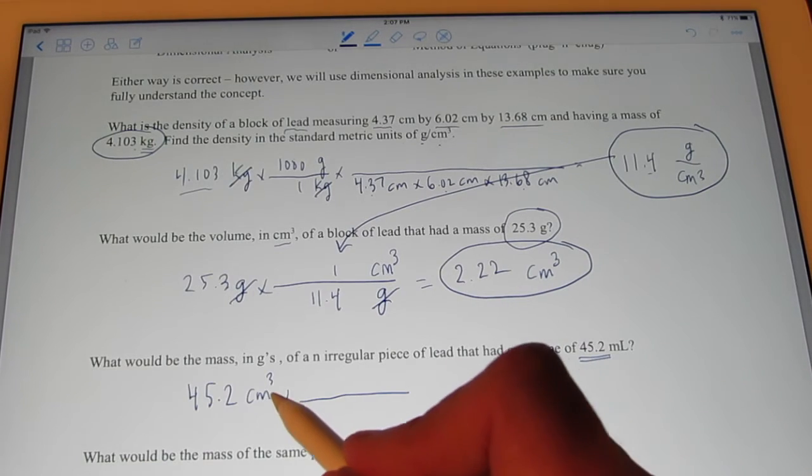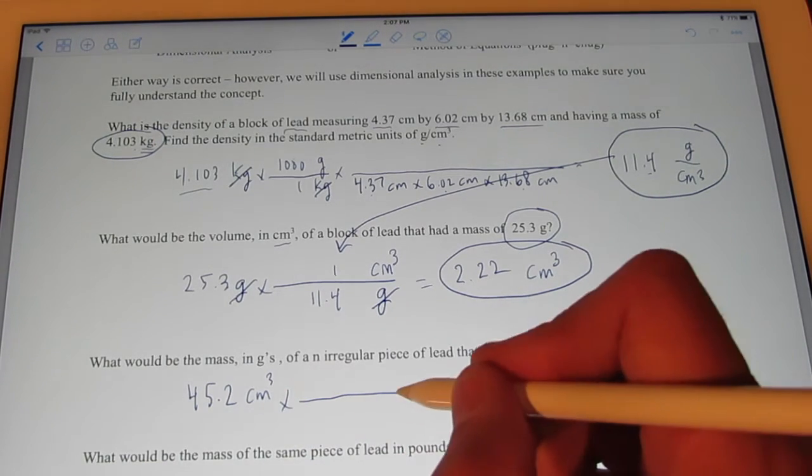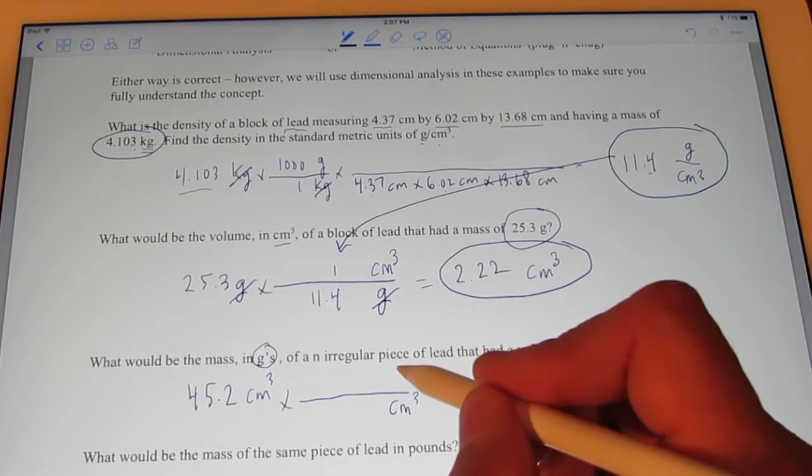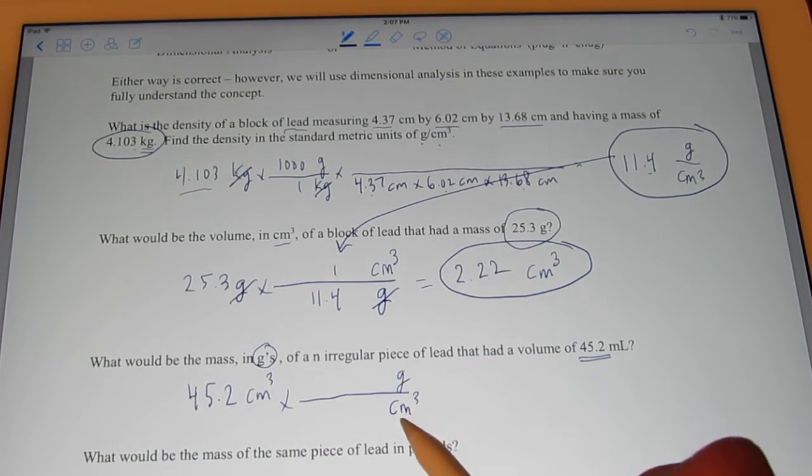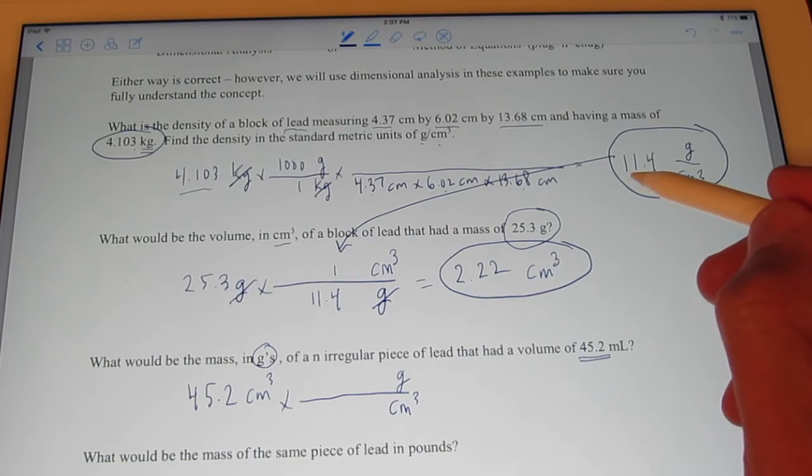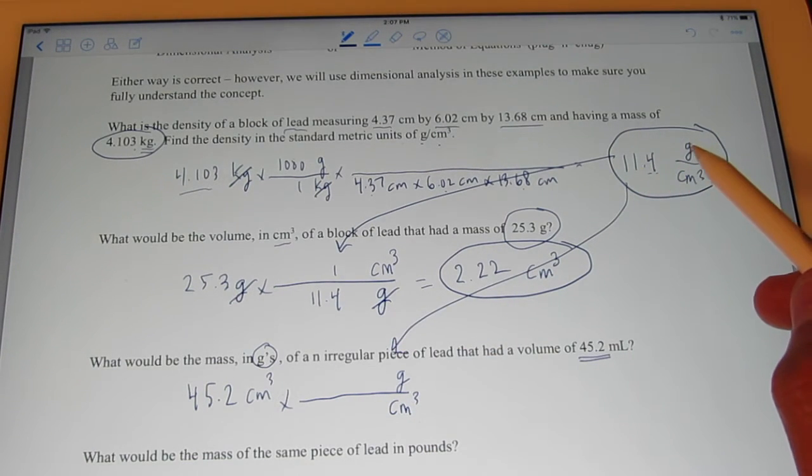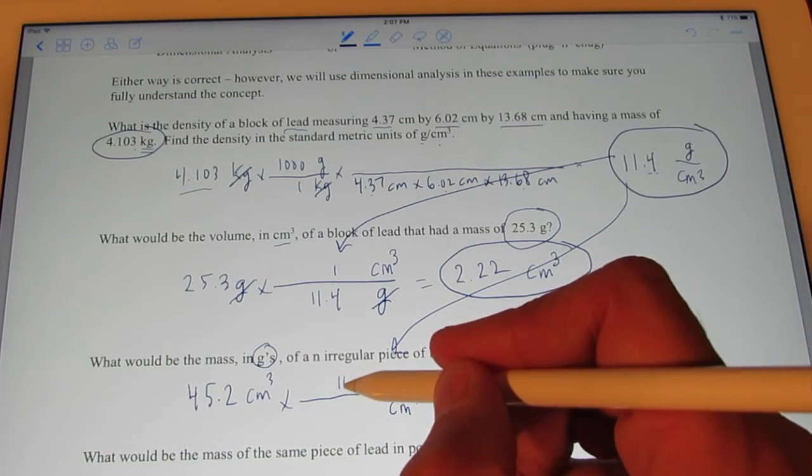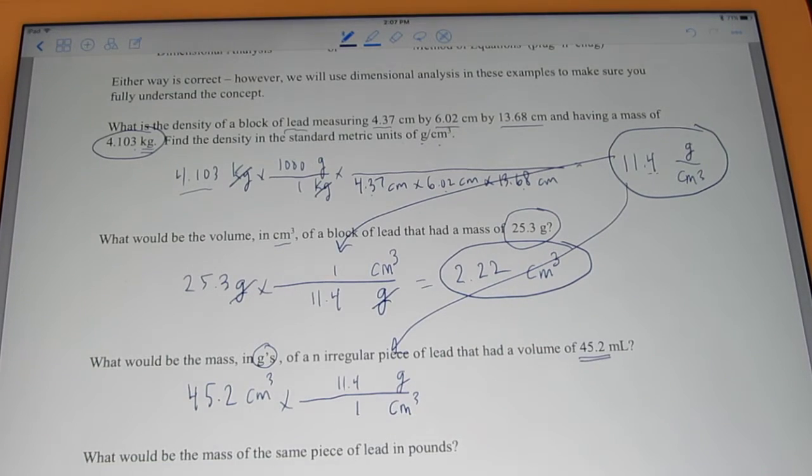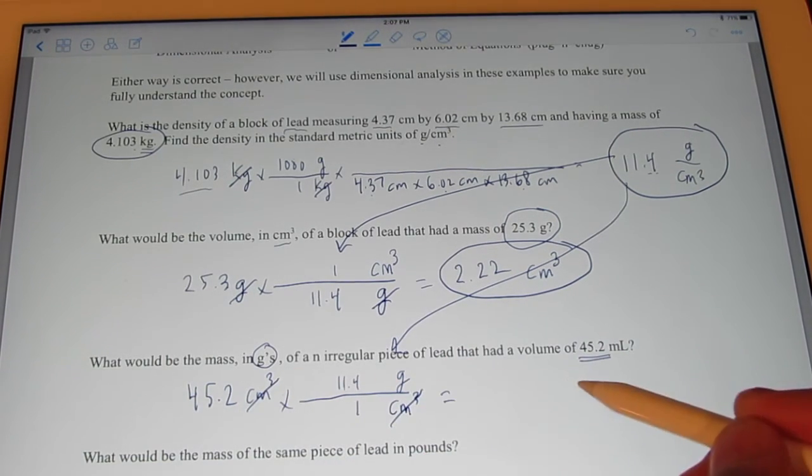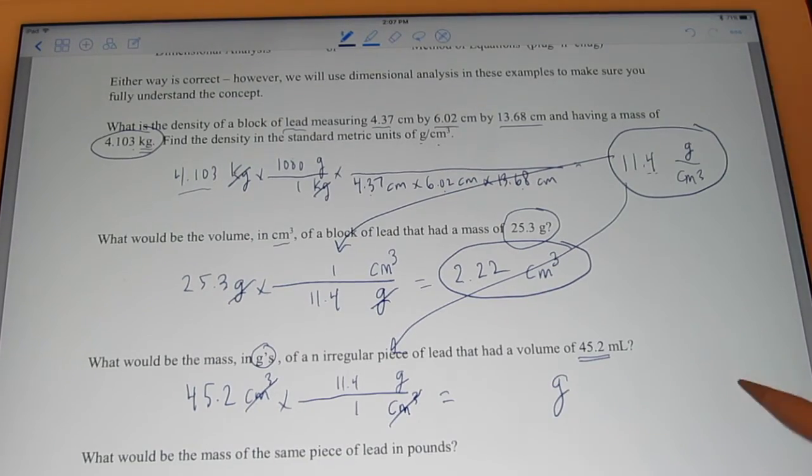Alright, we're back. So, now I have cubic centimeters over here. We want to hop out of cubic centimeters. And I want to find the mass in grams. So, do I know a conversion factor here? You bet I do. Don't I know that there are 11.4 grams in a cubic centimeter? 11.4 grams in a cubic centimeter. So, cubic centimeters divide out. And I'll have my answer in grams.